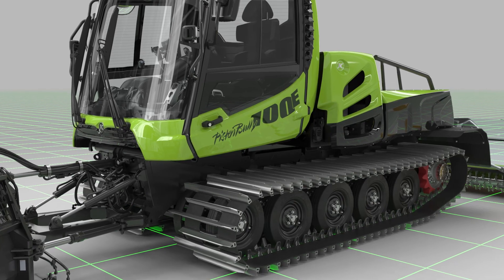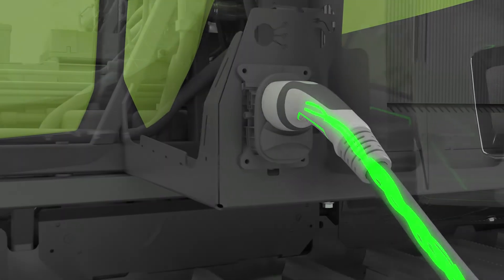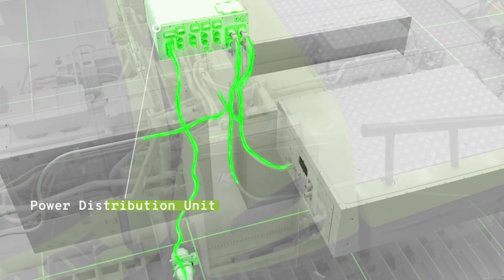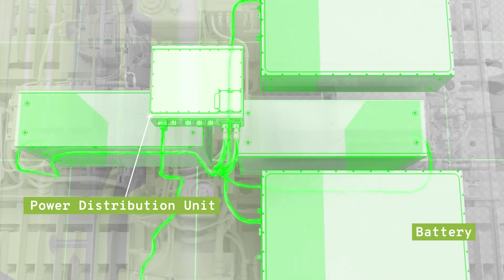With the PistenBully 100E, Kässbohrer brings the first fully electric PistenBully on the snow. In just two hours, the four batteries are charged with quick charging at 100kW charging power.